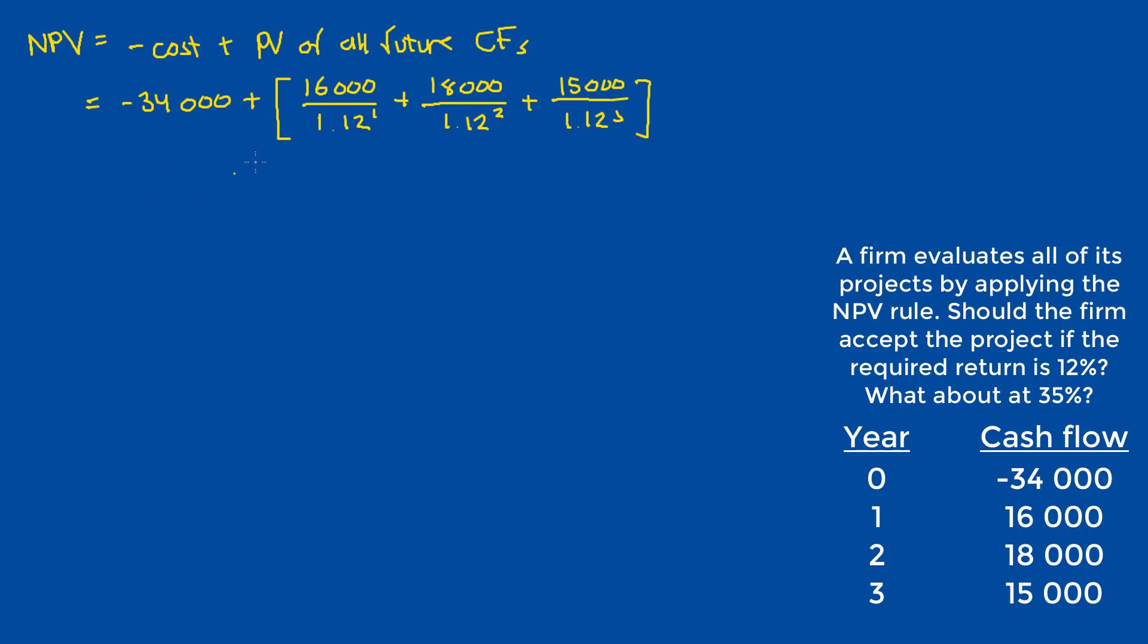And now calculating this out, we should get $5,311.91 as our answer. Fundamentally, nothing really changes when the rate of return changes to 35%. We would keep the same setup except the denominator would be 1.35. So NPV equals negative 34,000 plus 16,000 over 1.35 plus 18,000 over 1.35 squared plus 15,000 over 1.35 cubed. When we calculate this, it should be negative $6,174.97.